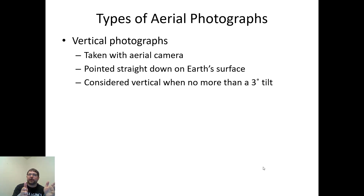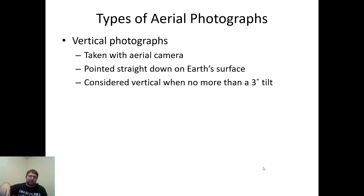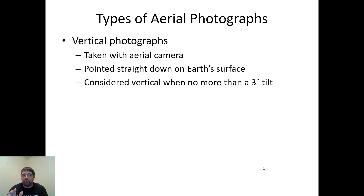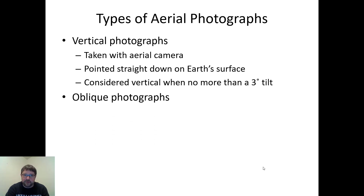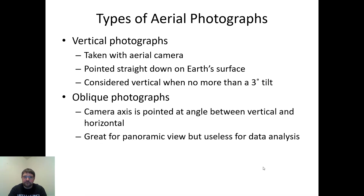With an automated camera system, the pilot flips it on and it starts taking pictures across the entire distance traveled. The old-fashioned way, the pilot says when to start and the photographer snaps pictures along a transect, then loops back for the next line. As long as there is less than three percent tilt it's considered a vertical photograph — that's really important, because anything more than three percent tilt causes an angle and you cannot use it for GIS analysis. You can also do oblique photographs, where the camera is pointed at an angle somewhere between vertical and horizontal.